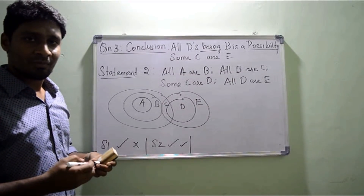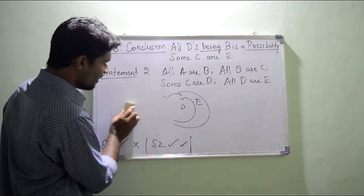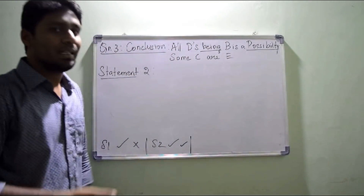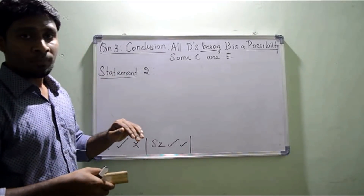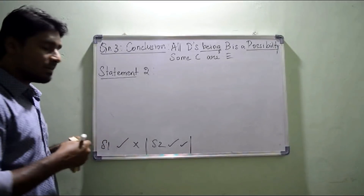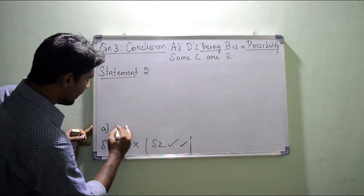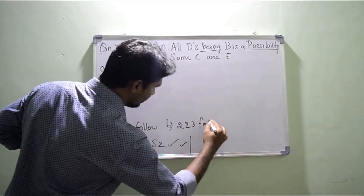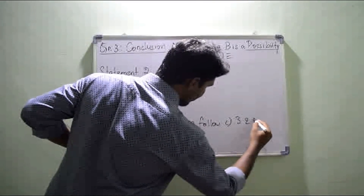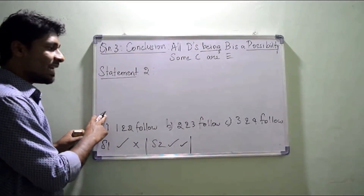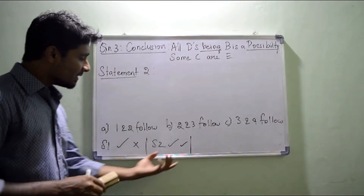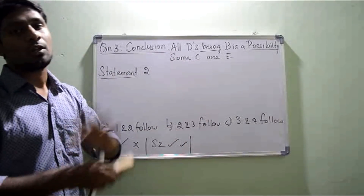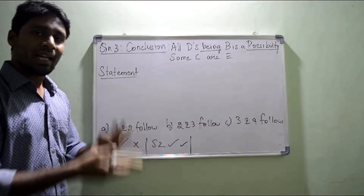Statement two is getting followed. As I told in the previous question, if one thing is getting correct in the first option, I can check further. The given options are: option A — statements 1 and 2 follow; option B — statements 2 and 3 follow; option C — 3 and 4 follow; option D — 4 and 5 follow; option E — none follow. Since statement 2 is followed, I cannot confirm option B yet because it requires both 2 and 3 to follow. So please check statement three — if it is also correct, then I can go for option B.